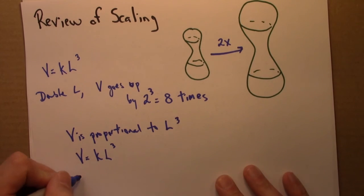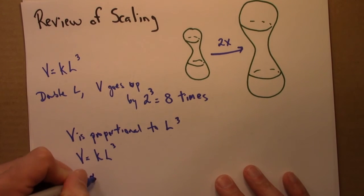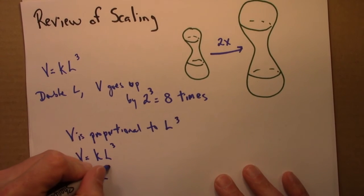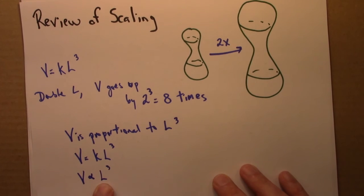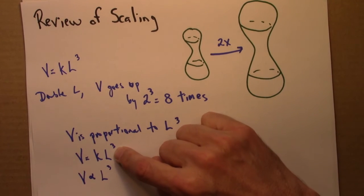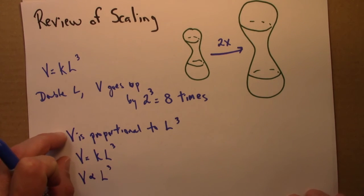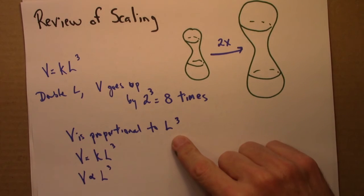This is also sometimes written, so you would read that V is proportional to L cubed. I kind of prefer this notation, but this is certainly common. And then this is how one would say this. So V is proportional to L cubed.